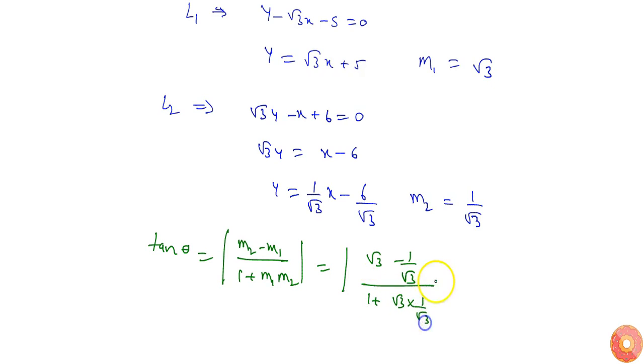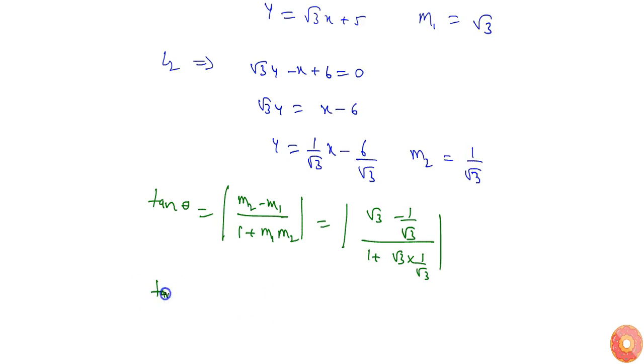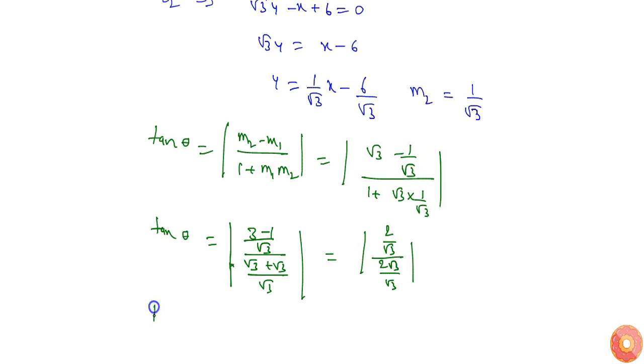1 by root 3. So it will be tan theta equals 3 minus 1 by root 3 divided by root 3 plus root 3 by root 3. So I will get from here 2 by root 3 by 2 root 3 by root 3, or I can say tan theta equals